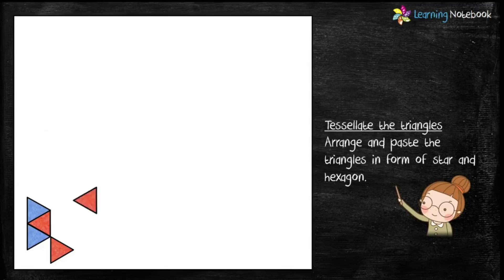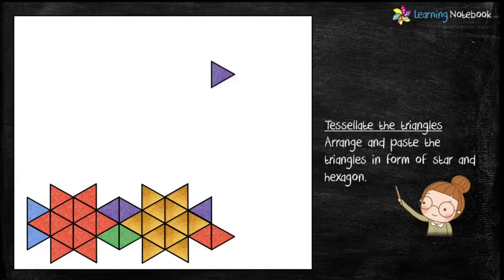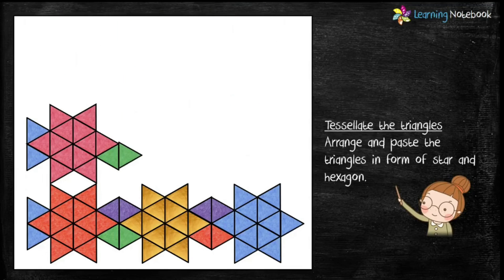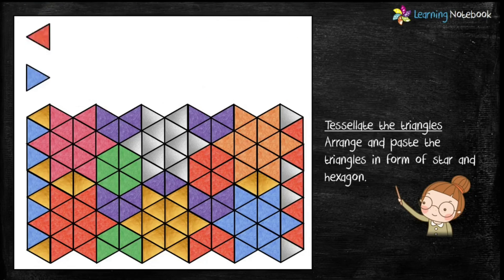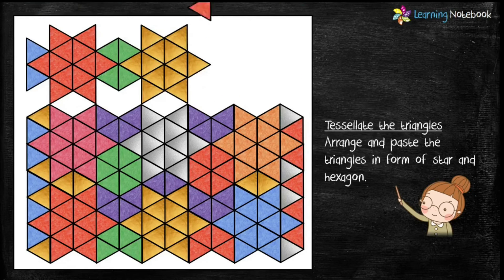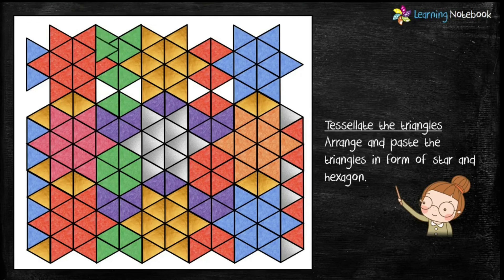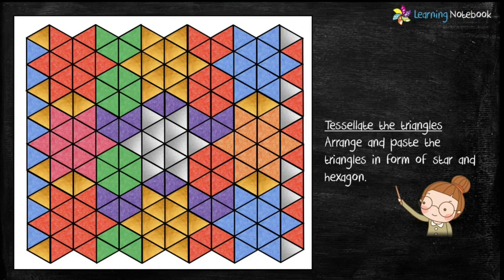Now students, we have all the material to make the tessellation of equilateral triangles. So, take a white A3 sheet and arrange and paste the triangles in the form of star and hexagon as shown here. So, in this way, we can form beautiful tessellation using equilateral triangles.